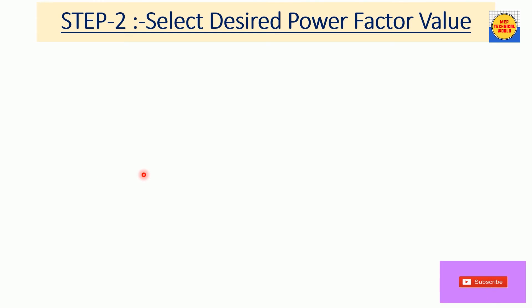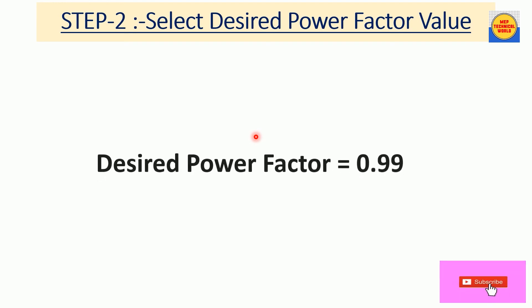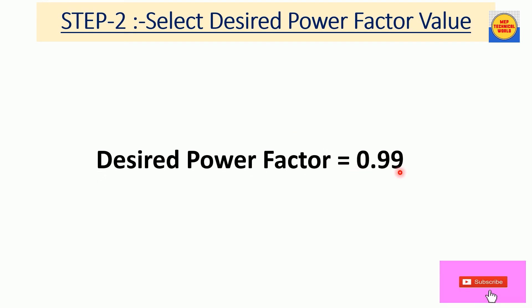Now move to Step 2. In Step 2, we have to select the desired power factor value as per your requirements — for example, 0.8, 0.95, or 0.96. Here I have taken the desired power factor value as 0.99.